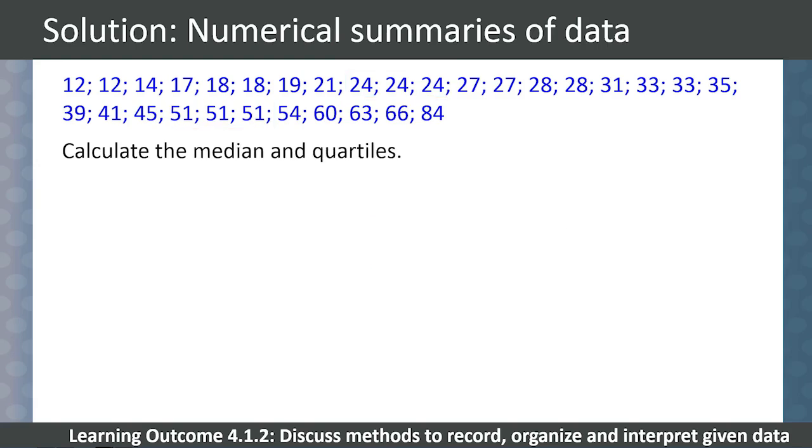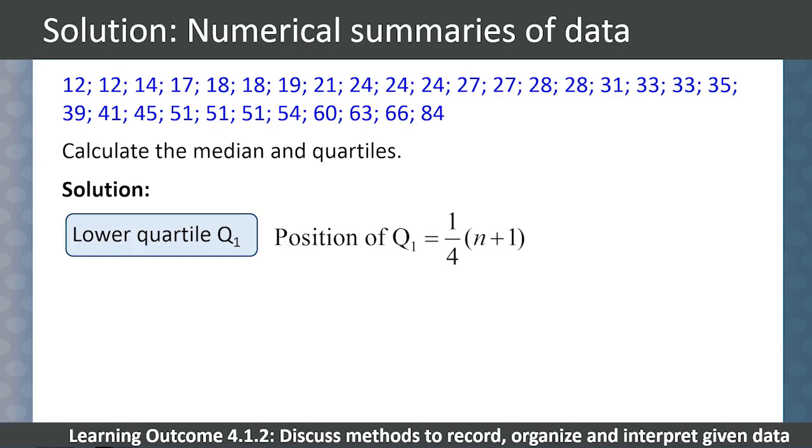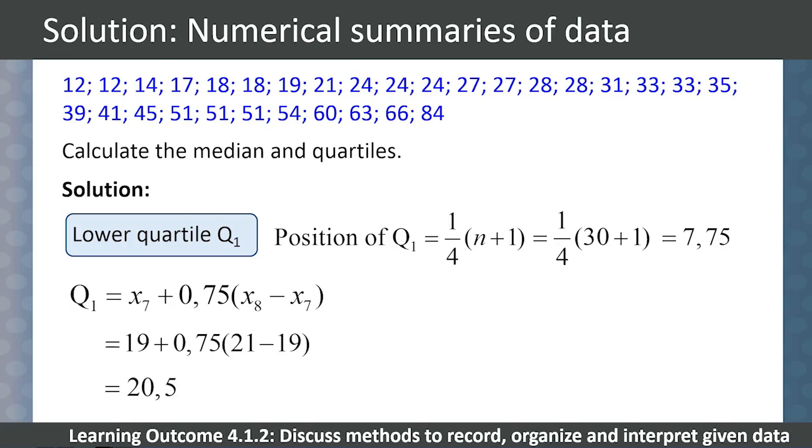And now to calculate our measures of dispersion, the median and quartiles. To find these, we first need to find the position before we can find the value. For our lower quartile Q1, the position of Q1 is given by 1/4 times (n+1). n is 30, so the position of Q1 is 7.75. Our value for the lower quartile is calculated as the 7th value plus 3/4 of the 8th value less the 7th value, which gives us 19 plus 0.75 times (21 minus 19). So the lower quartile is 20.5.